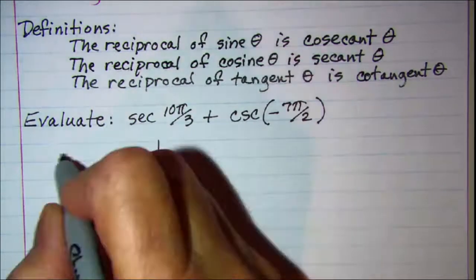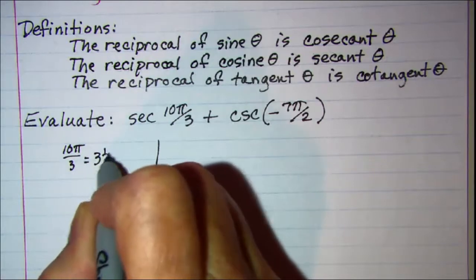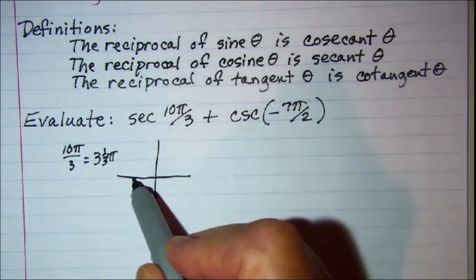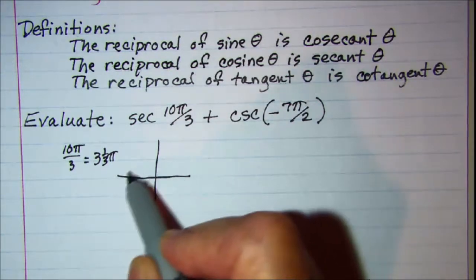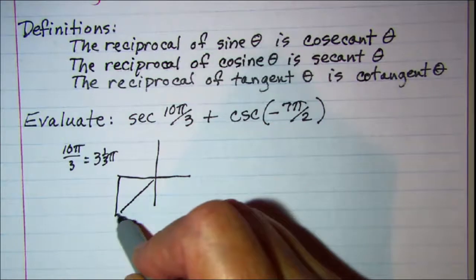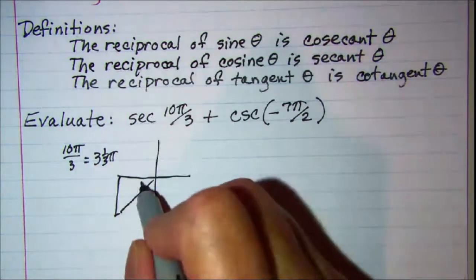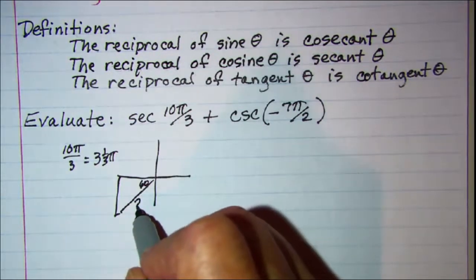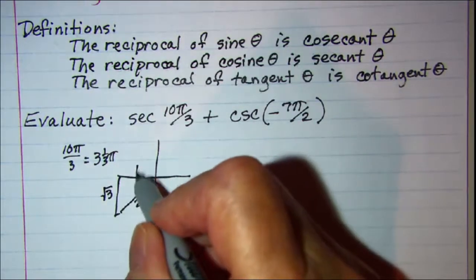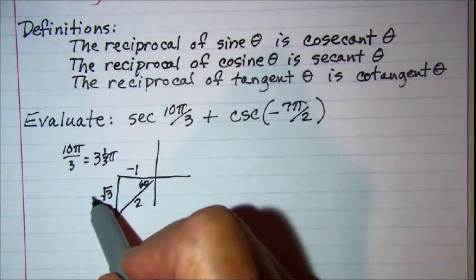10π over 3, I would think of that as 3 and 1/3 π. So a positive rotation: there's 1π, 2π, 3π, and then a third would be in quadrant 3. When our denominator is 3, we have a reference angle of 60. So our sides on this triangle, the side opposite the 60 is root 3 and then the other one is 1. Because this is left it's negative and this one's down it's negative as well.